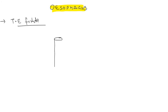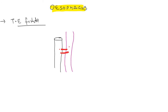You know that in front we have the trachea and just behind it we have the esophagus. A fistula is an abnormal communication between two lumens, so when there is communication between the trachea and esophagus it is called a tracheoesophageal fistula.